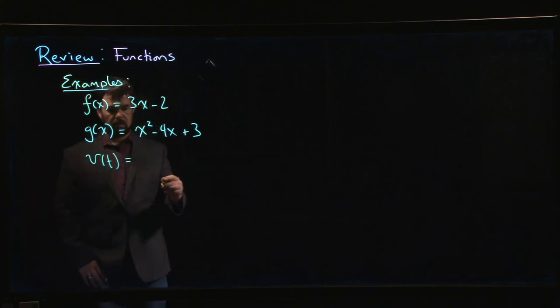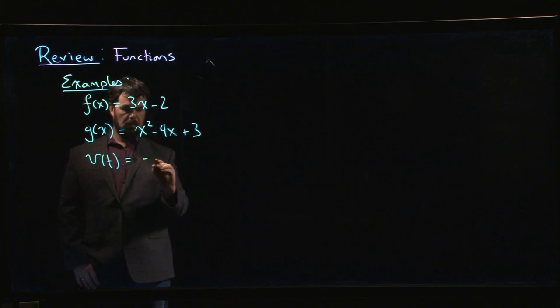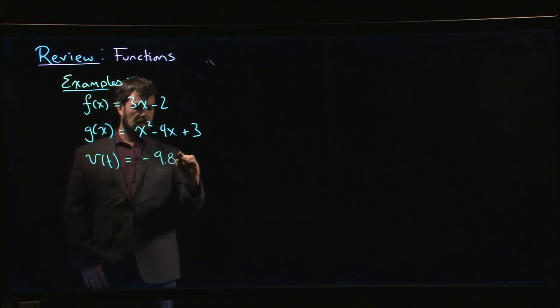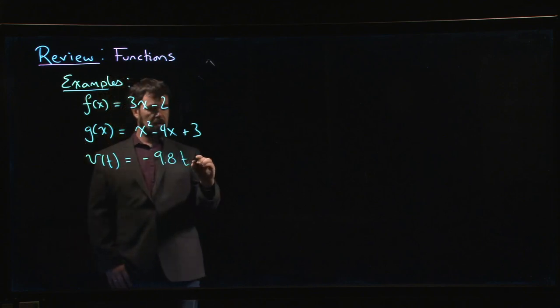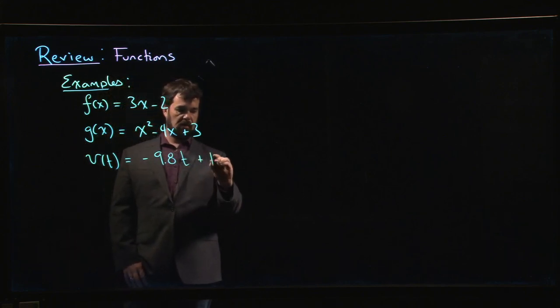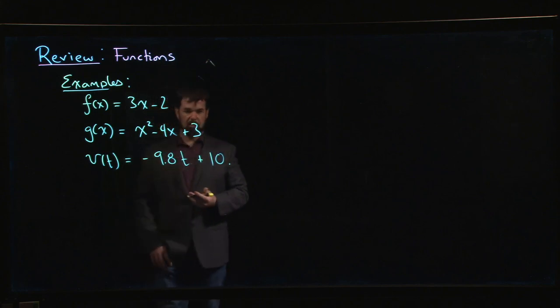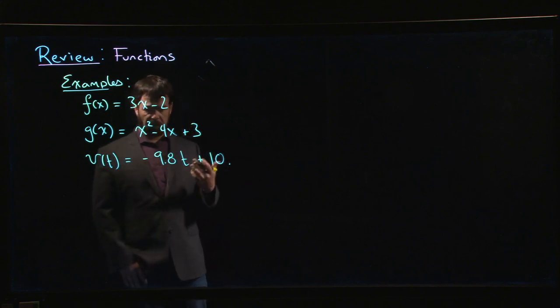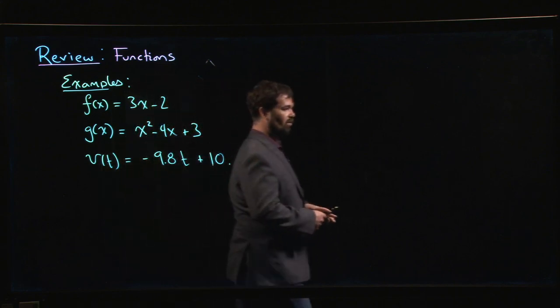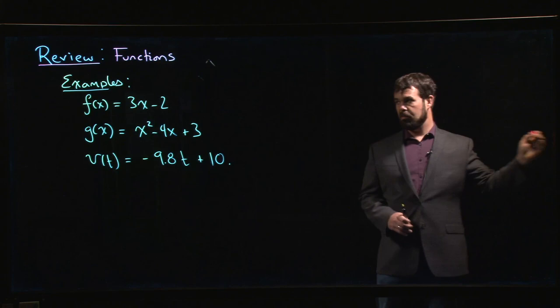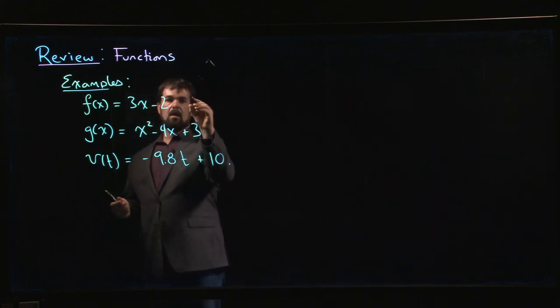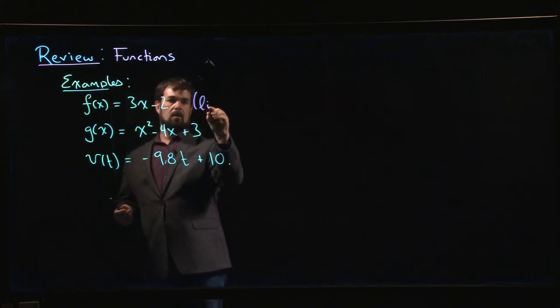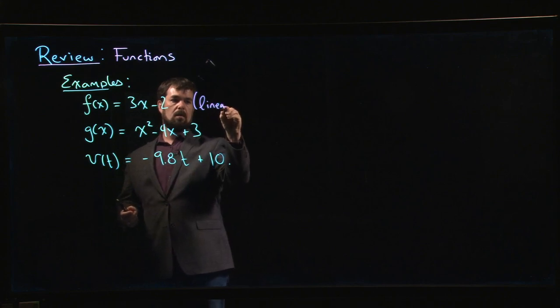So you might have something like v(t) = -9.8t plus some initial speed, something like that. These are all examples of functions you've encountered. Some of these functions have names; special types of functions have names to describe them.